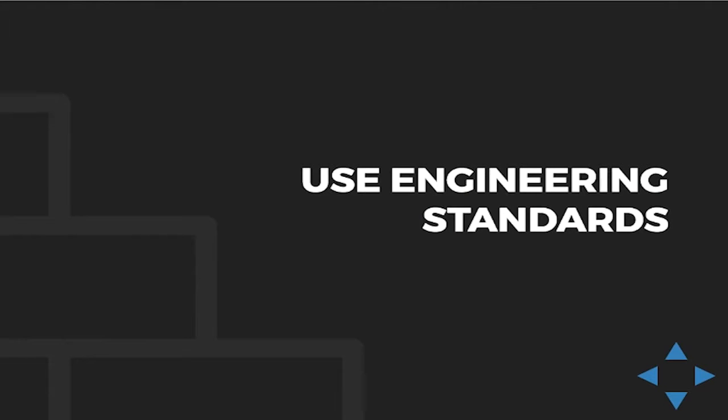So the first thing we started doing was using engineering standards. We had a great lightning talk about this earlier, but engineering standards are really simple — they're how you write code. They're a guiding document for your developers on how to style, how to do performance tuning, how you want to handle security issues, and how you want to handle all your testing. It keeps everyone on the same page writing quality code. No one's going to write engineering standards at the exact level they're already at, because you want to push yourself and go higher.